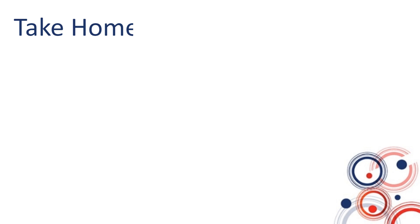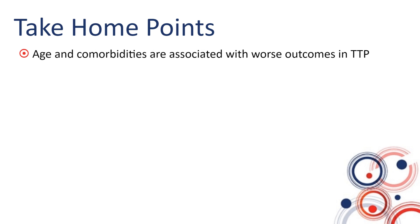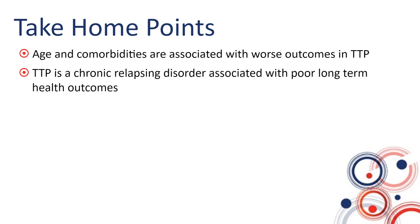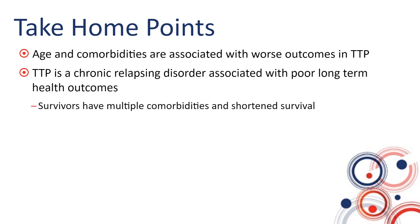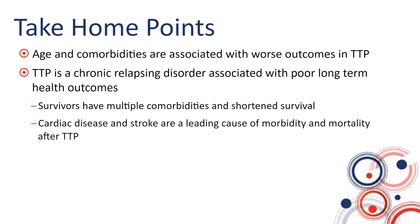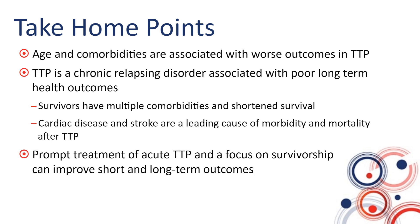In summary: age and comorbidities are associated with worse outcomes in TTP. TTP is now recognized as a chronic relapsing disorder associated with poor long-term outcomes. Survivors have many comorbidities and shortened survival, and cardiovascular disease is the leading cause of morbidity and mortality after TTP. Prompt treatment of acute TTP and a focus on survivorship will improve short- and long-term outcomes. Thank you very much for participating in this activity. I hope you found it useful.